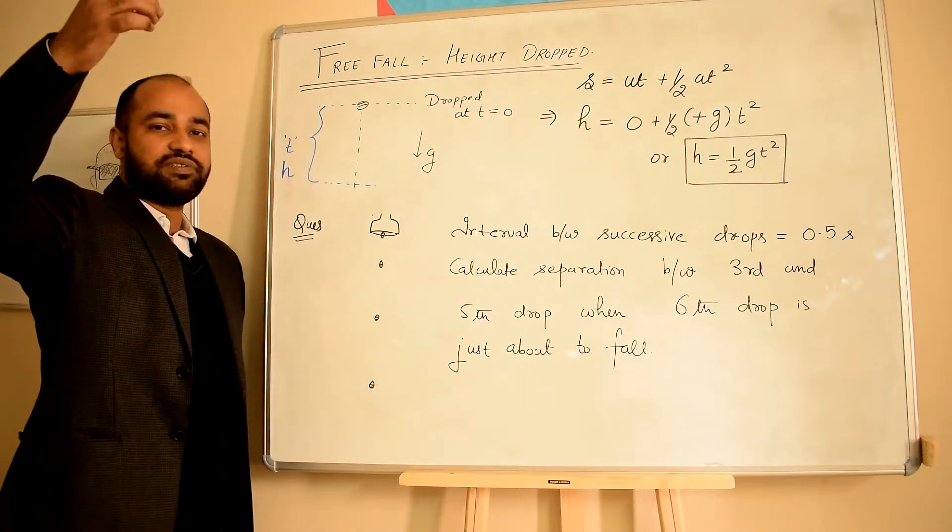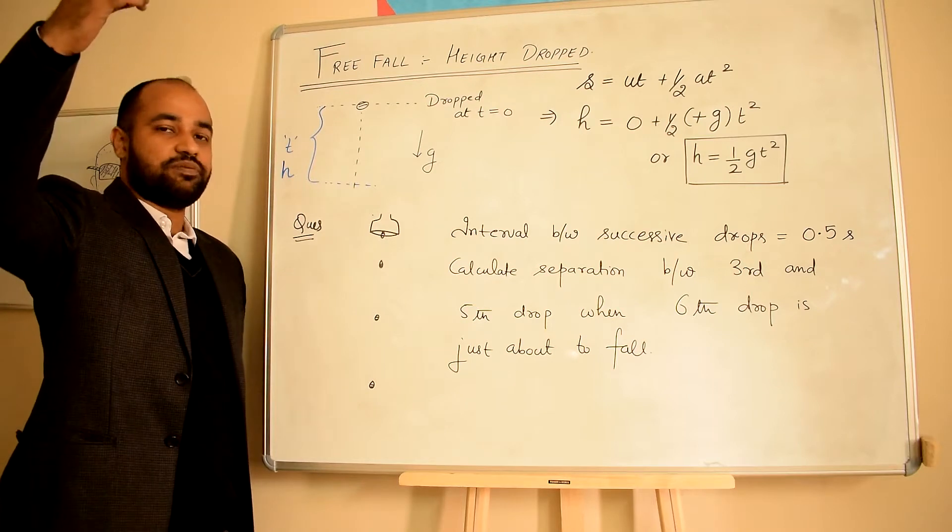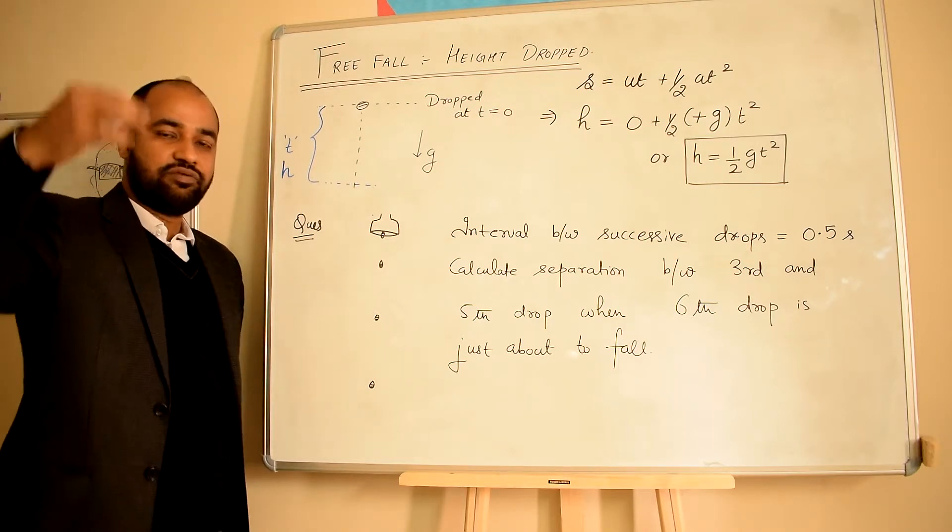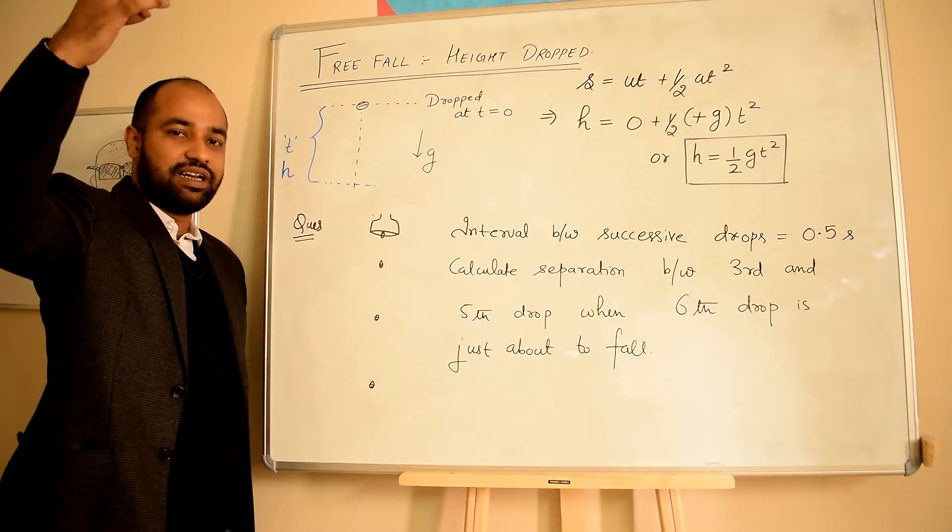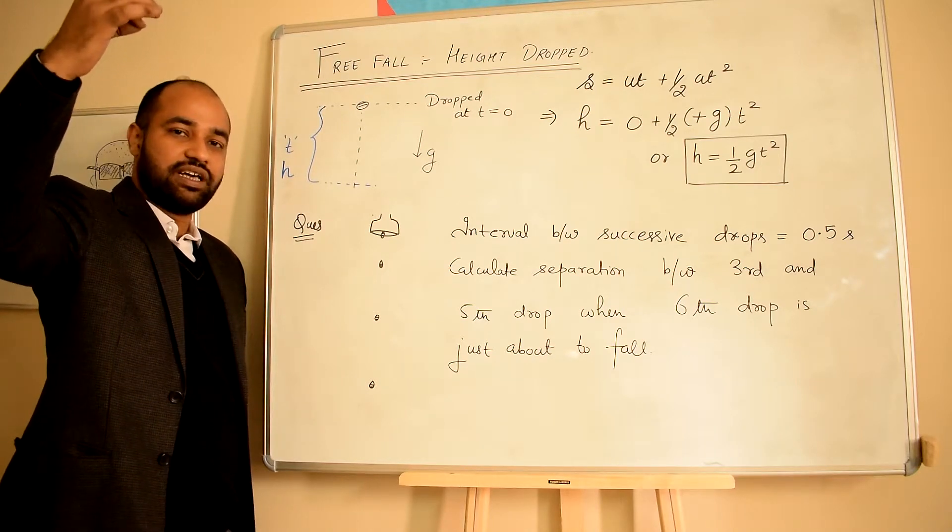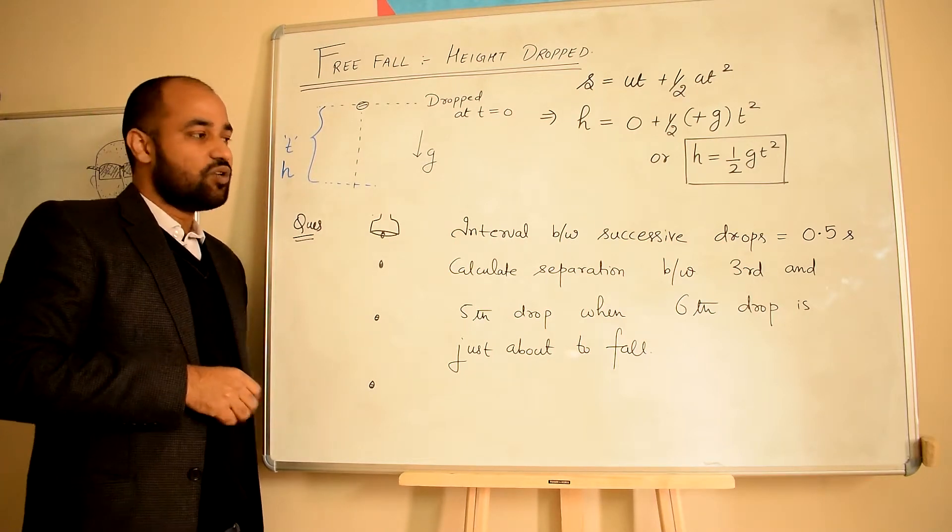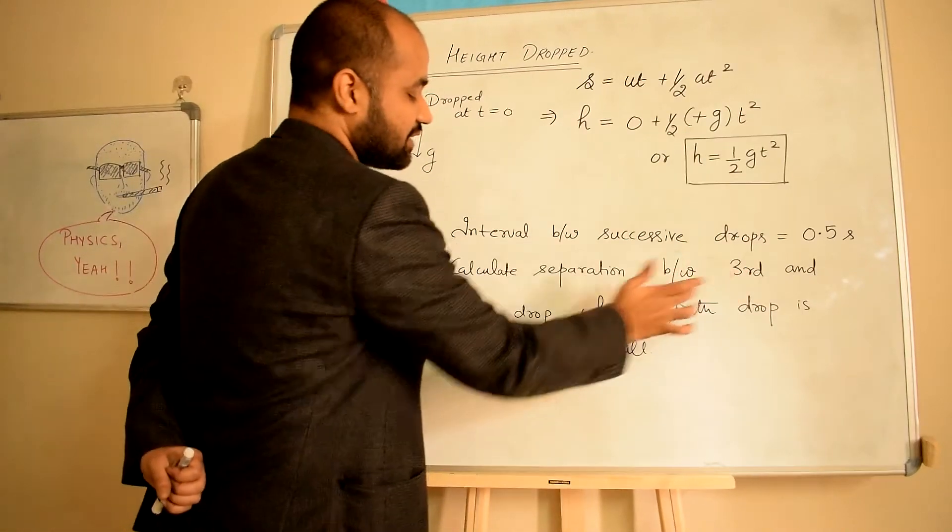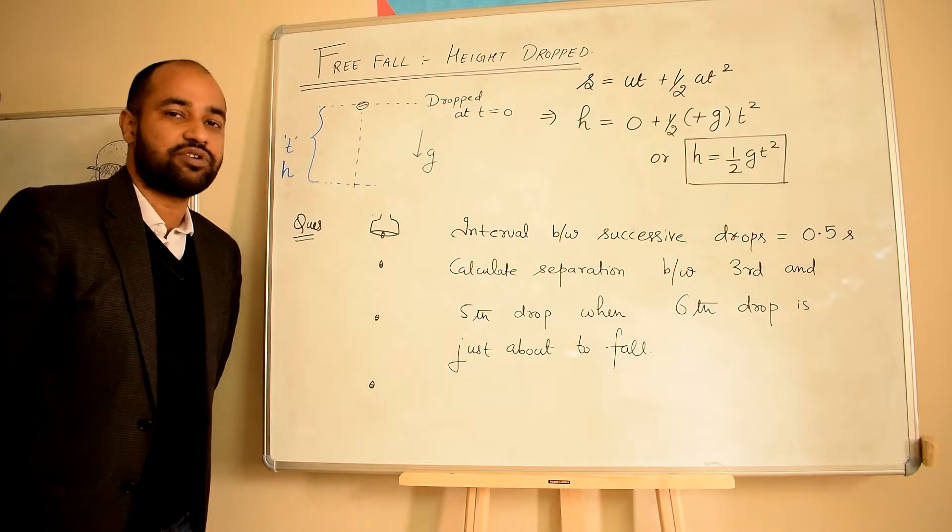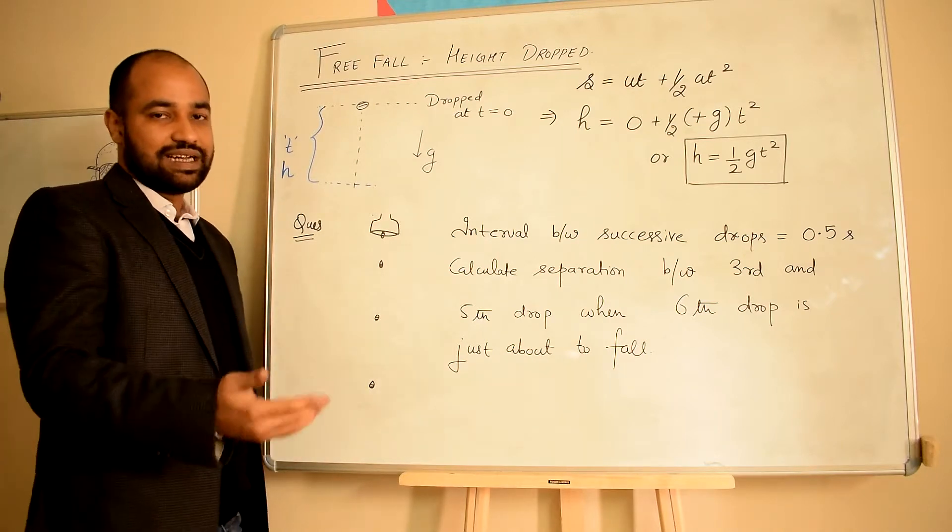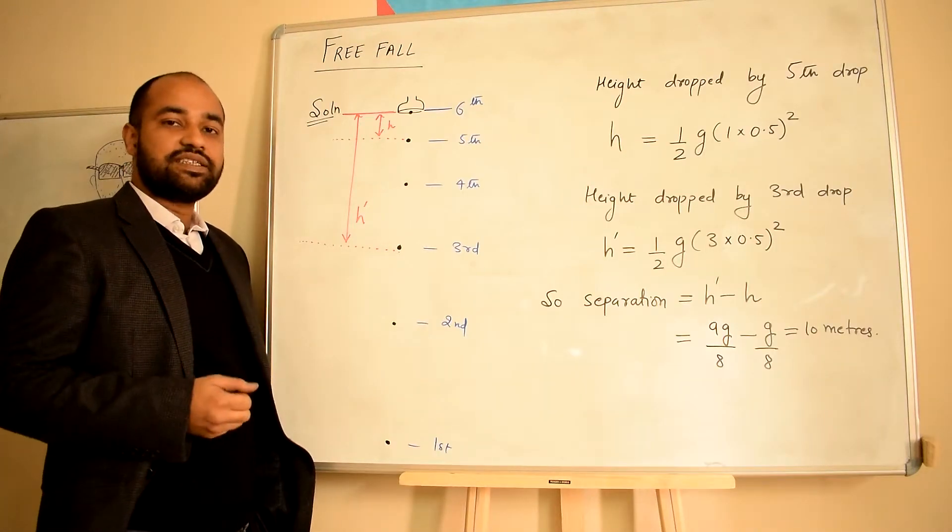Now let's start the observation: the first drop falls, second, third, fourth, fifth, sixth. When the sixth drop falls and the second drop is already falling, how much separation is there between the third and fifth drops? If you want to try it, you can pause or see my solution.